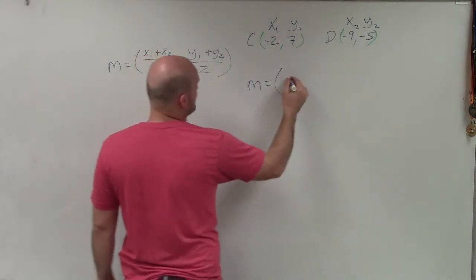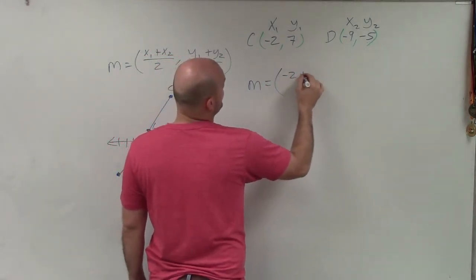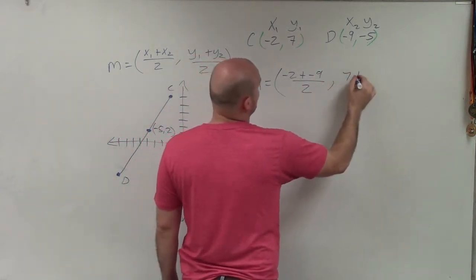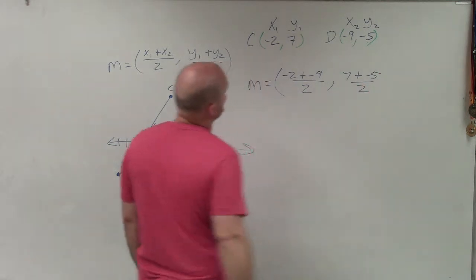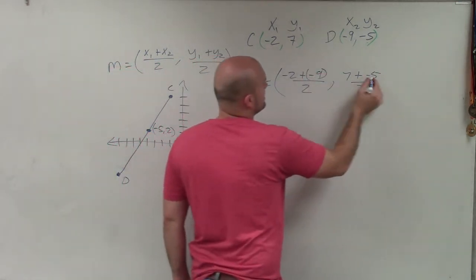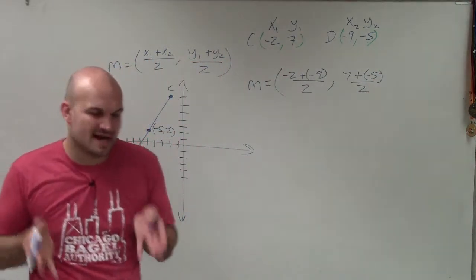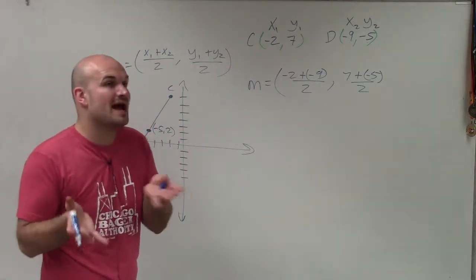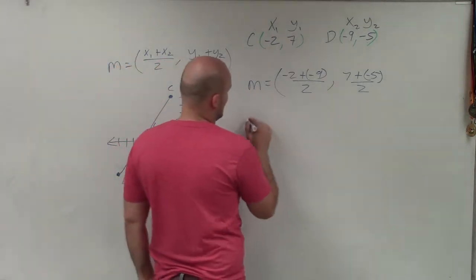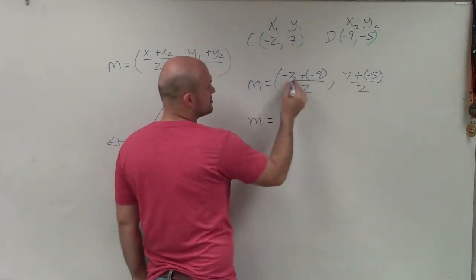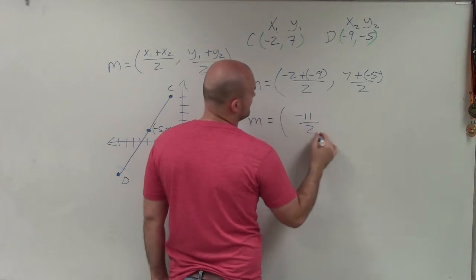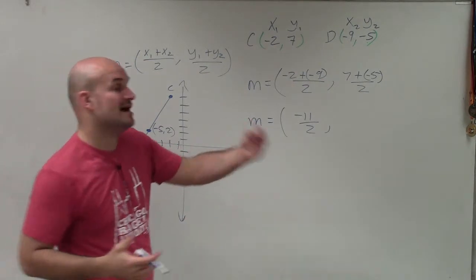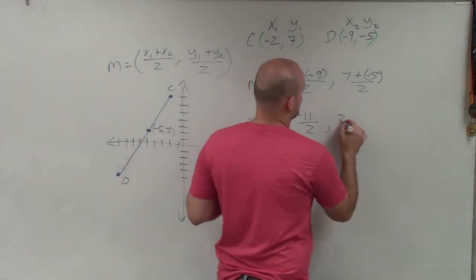Now I'll go ahead and plug them into my formula. So I have x1, which is negative 2, plus negative 9, divided by 2. And then I have 7 plus negative 5, divided by 2. It's very important to put them in parentheses to not get them confused. Negative 2 plus negative 9 — when we're adding two negative numbers, we just combine them and the answer is negative. So negative 2 plus negative 9 is negative 11, divided by 2. And 7 plus negative 5 is the same as 7 minus 5, which is positive 2.